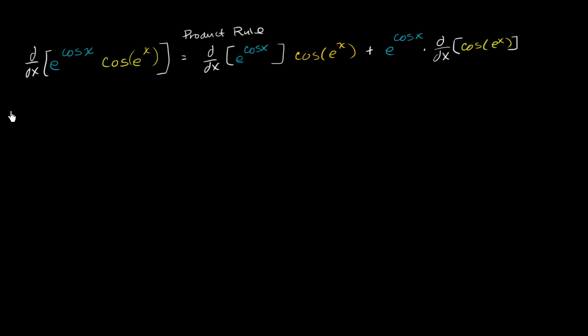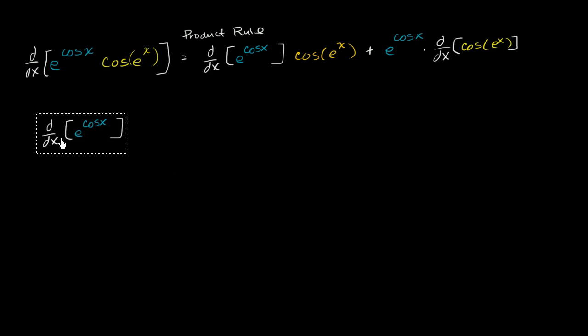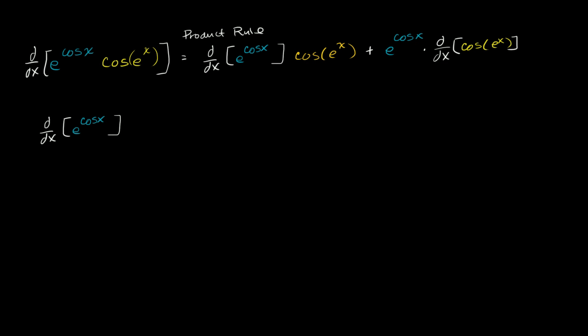Let's think about this a little bit. What is the derivative of e to the cosine of x? We can view our outer function as e to the something. The derivative of e to the something with respect to something is just going to be e to that something — so it's e to the cosine of x.